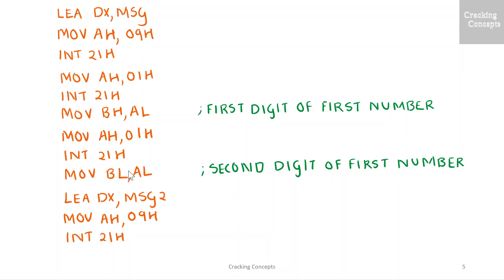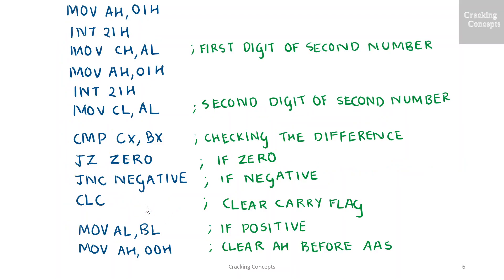Similarly, I'll display the string to enter the second number, which is message 2, and store its higher digit in CH and lower digit in CL.